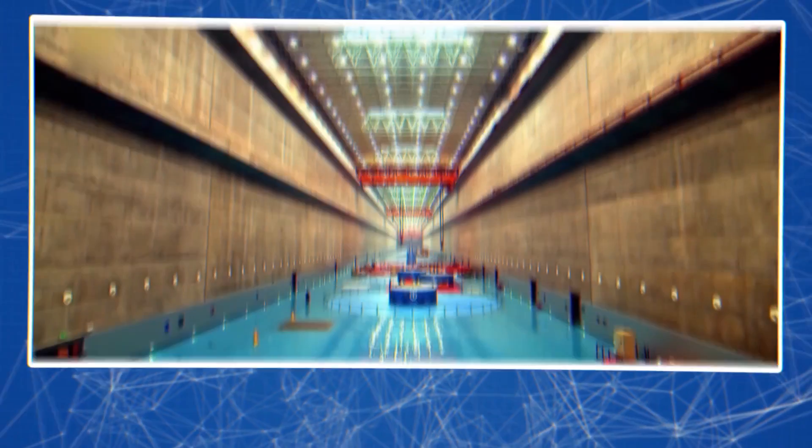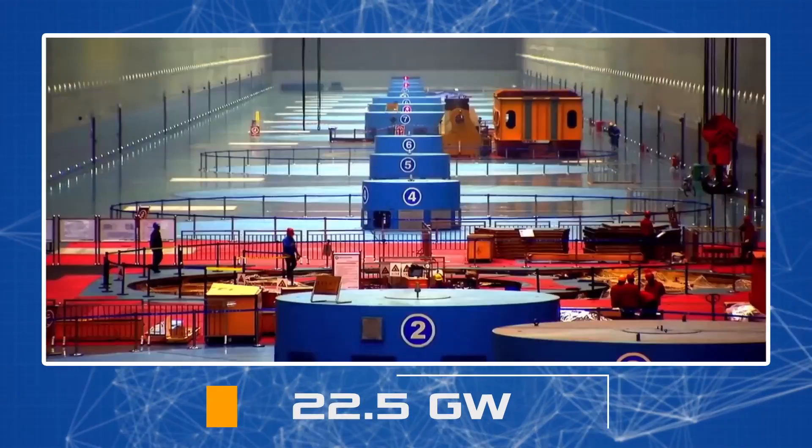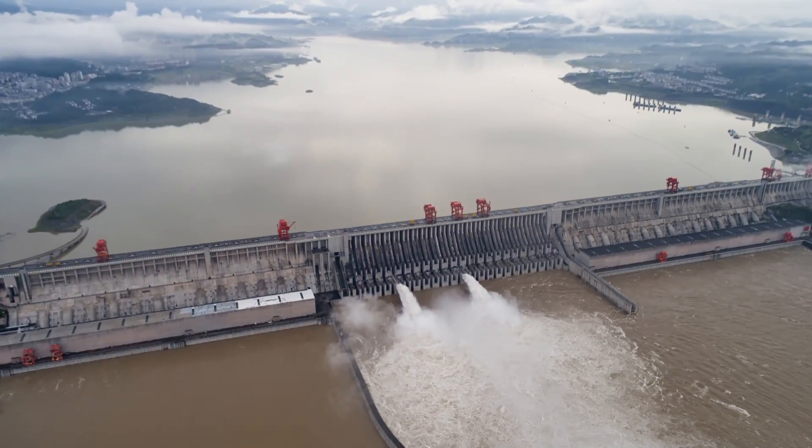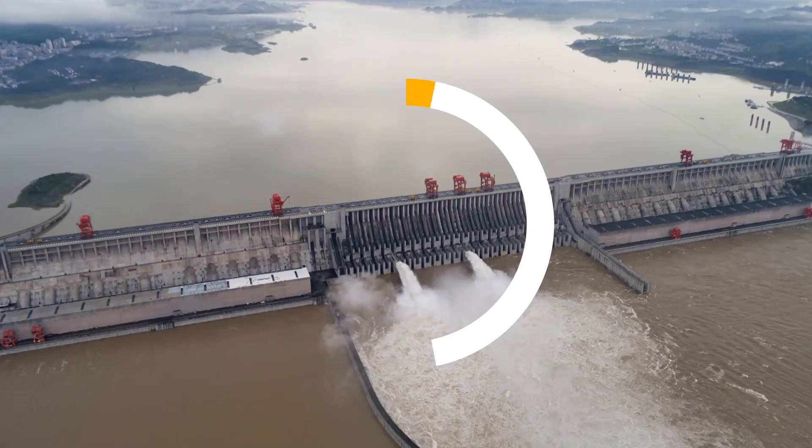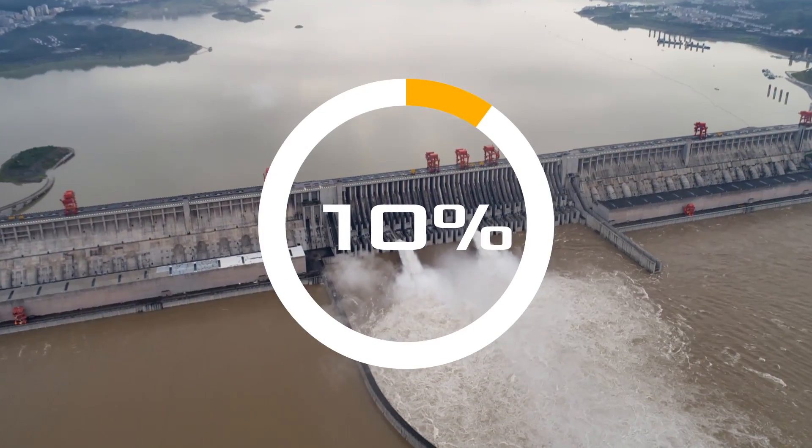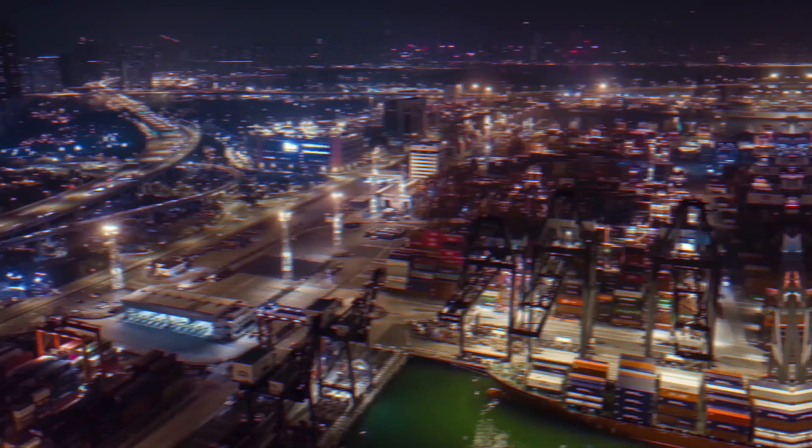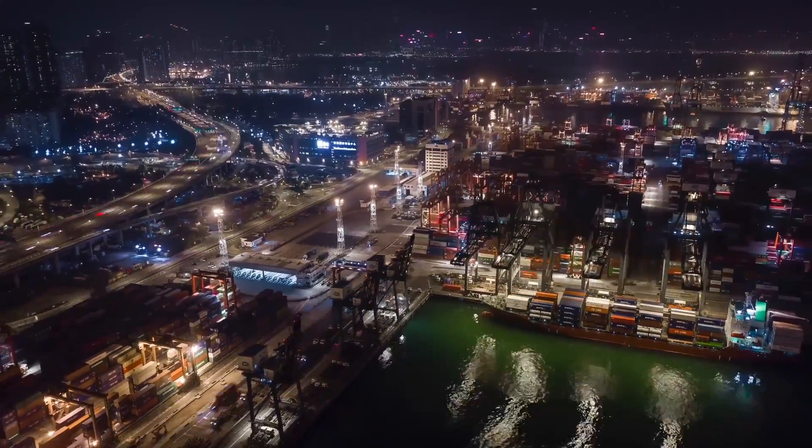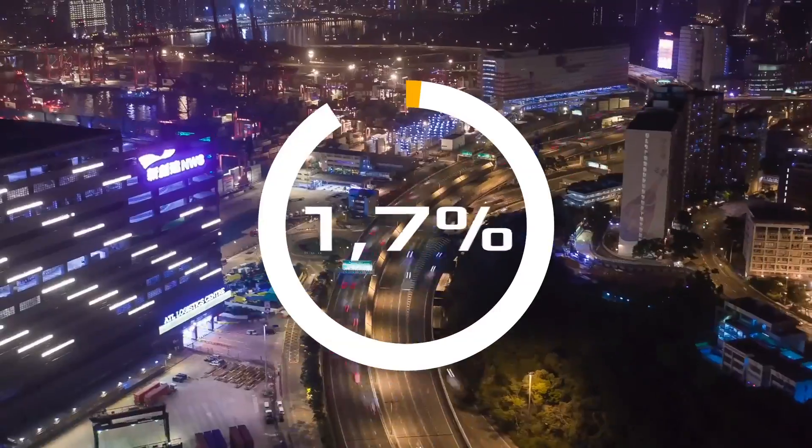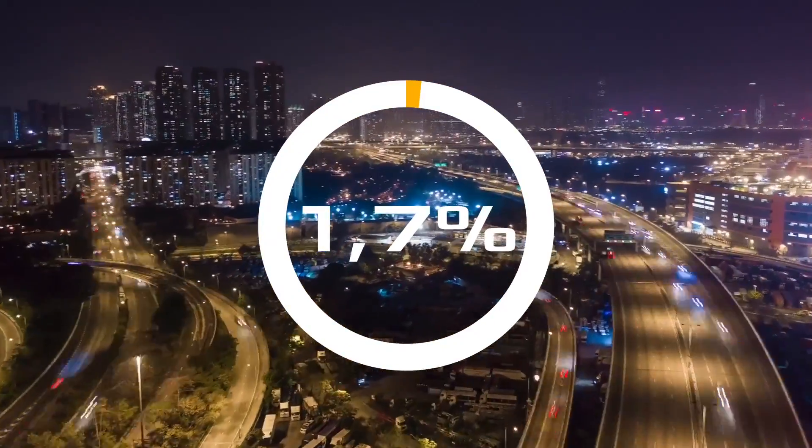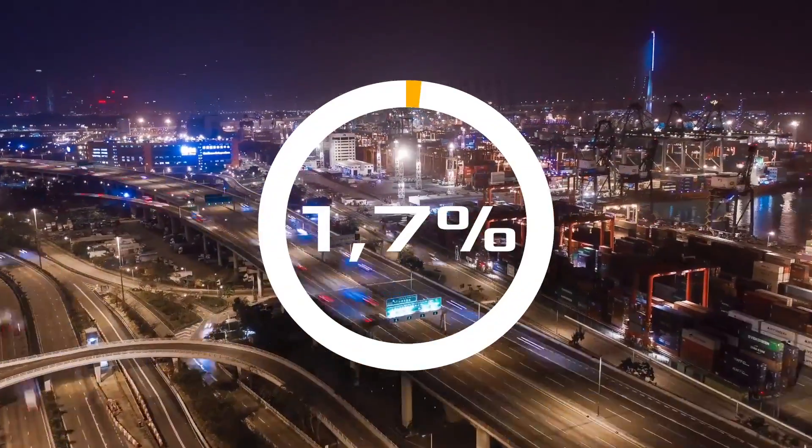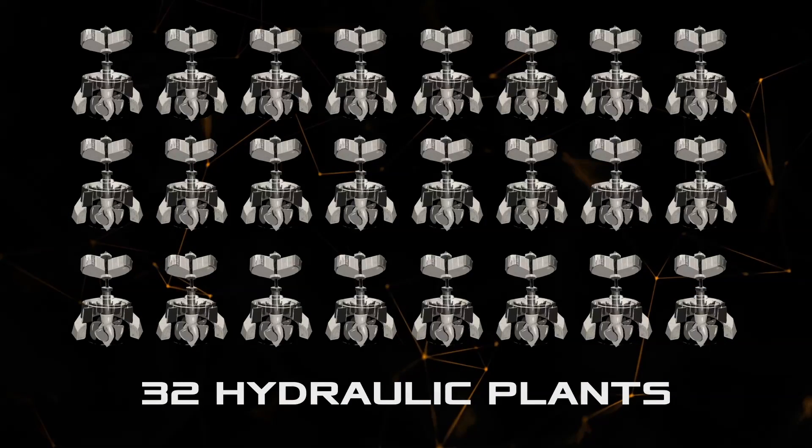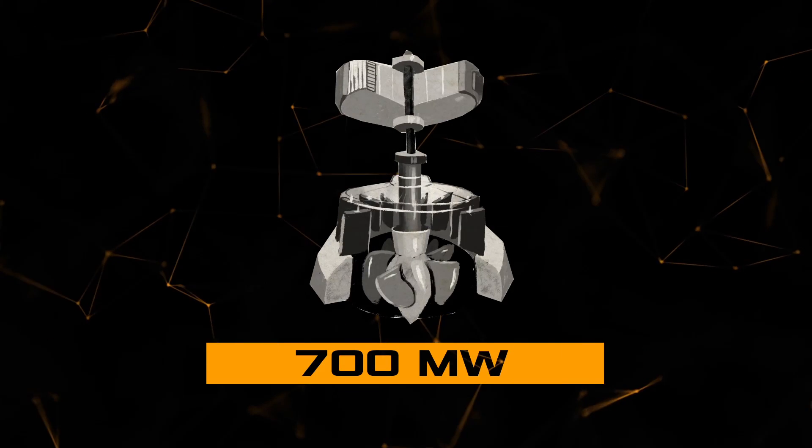The dam houses a hydroelectric power plant with a capacity of 22.5 gigawatts. At the beginning of construction, it was assumed that the giant power plant would be able to produce 10% of the country's total demand. However, due to high rates of economic development, the hydroelectric power station was able to satisfy only 1.7% of the needs by the end of construction. Such huge power is provided by 32 huge hydraulic plants with a capacity of 700 megawatts each.